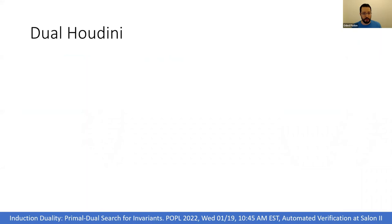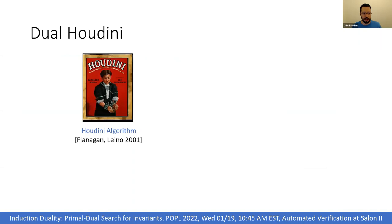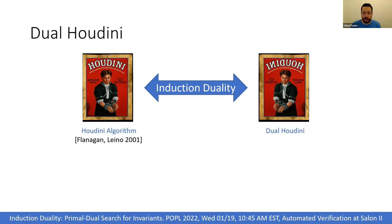We use induction duality to derive a new algorithm, dual Houdini. We take the well-known Houdini algorithm as a starting point and push it through the induction duality formulas. The result is a dual version of Houdini, which we call dual Houdini, that can be used to discover new predicates.